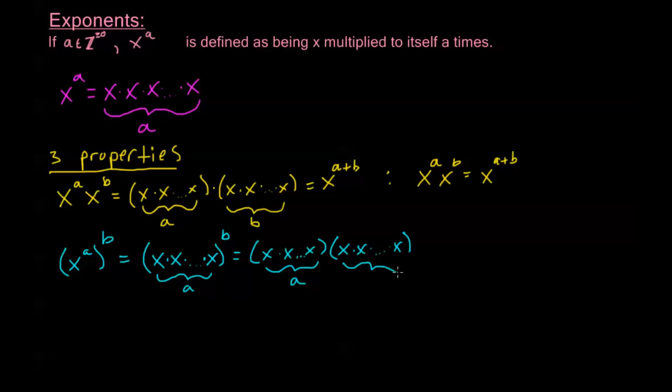What this exponent b means is that I'm going to take everything in this parentheses and multiply that to itself b times. So I have x times x, a of those, and I'm going to do it again. I have a of those, going all the way until there's going to be b total of them. I'm just reapplying my definition again. So that's going to be the same as x to the a times b.